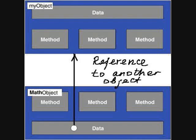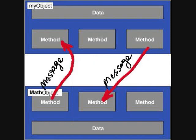Then, an object can call methods of other objects. In terms of system design, the first object is sending a message to another.